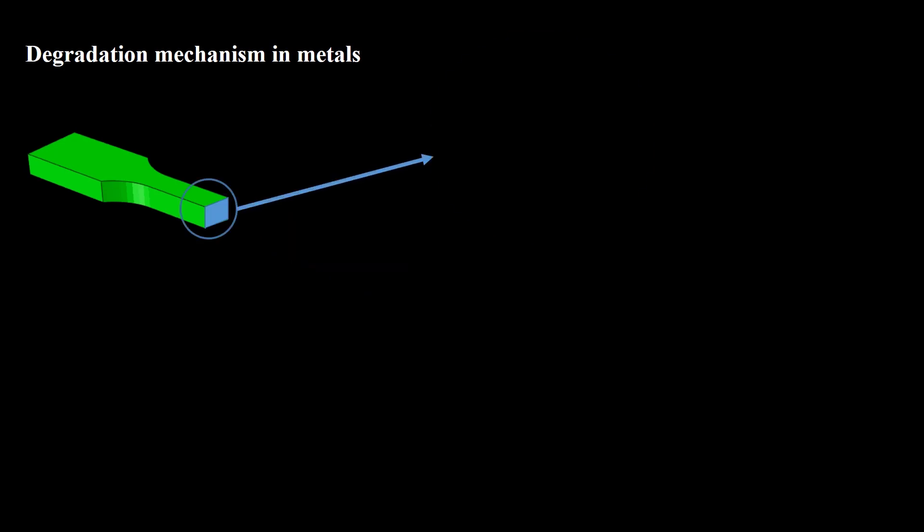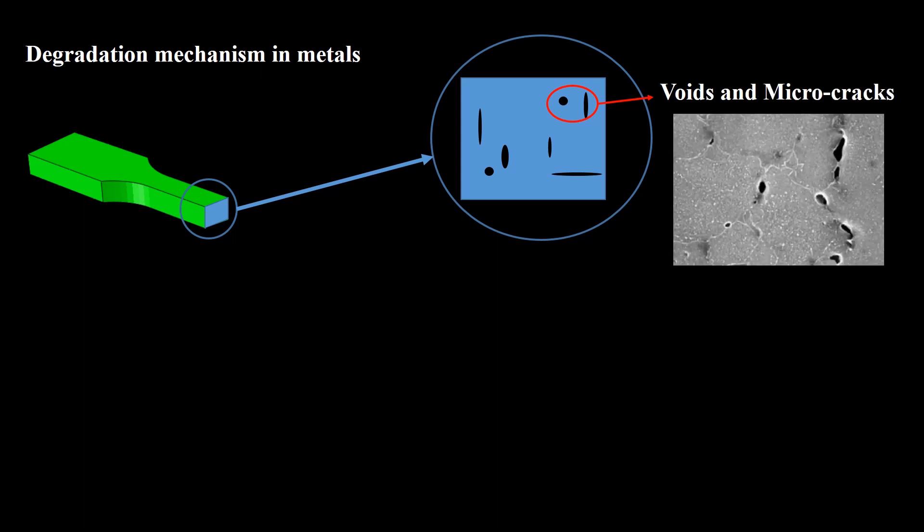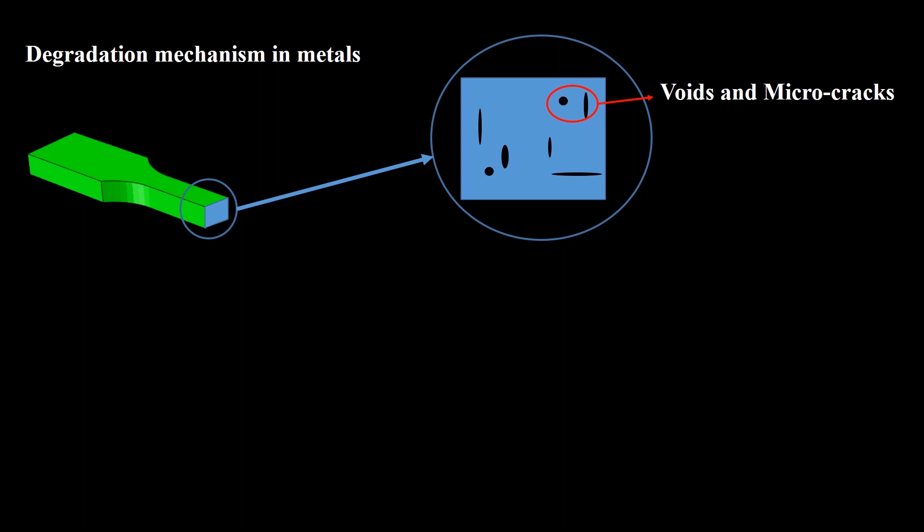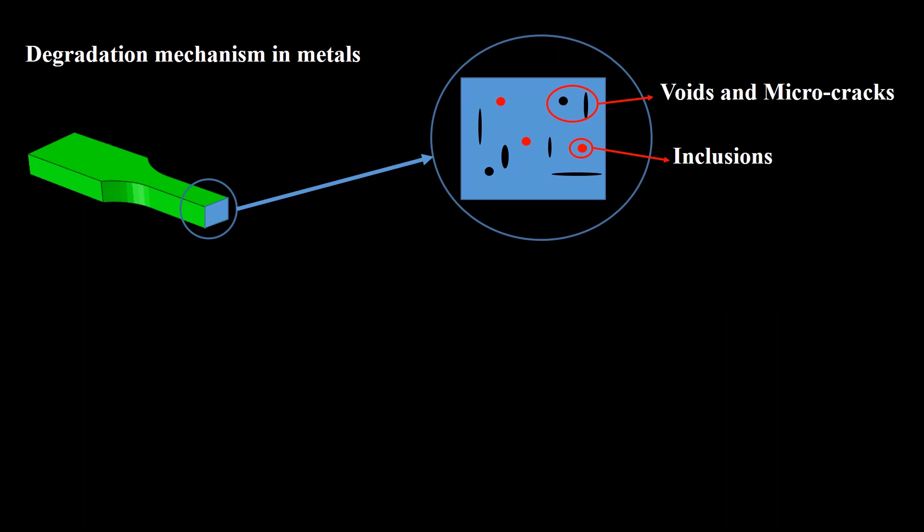Consider a specimen or workpiece during deformation. Most of the time we assume that the part has perfect material, but in fact it contains micro voids and micro cracks. Here is a real picture of voids in a metal. The part may contain some inclusions. This picture shows an inclusion in a metallic part and we can see initiation of a crack beside it.